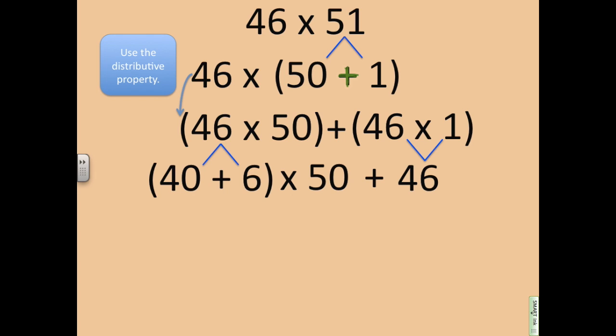Since I had parentheses up here around 46 times 50 to tell me to solve that first, I'm going to make sure that I add in brackets down below. That's telling me that I want to solve that whole part before adding 46. I added these parentheses around the 40 plus 6 because it was another way of writing 46. Since I already have parentheses now, those other parentheses turn into brackets. It helps us solve the problem and tells us the order of operations in which to solve it.